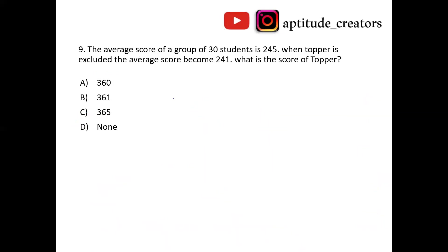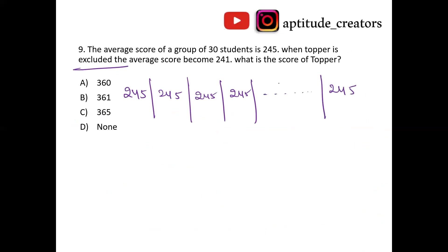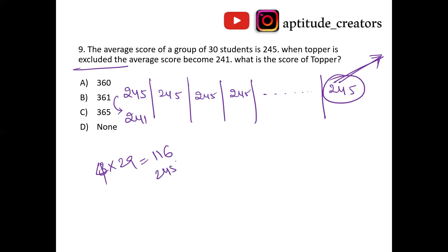The average score of 30 students is 245. Assume all numbers are 245. When the topper is excluded, the average becomes 241 — a decrease of 4. The remaining 29 students each contribute 4 marks: 4 × 29 equals 116. Topper's score is 245 plus 116 equals 361. Answer is option B, 361.